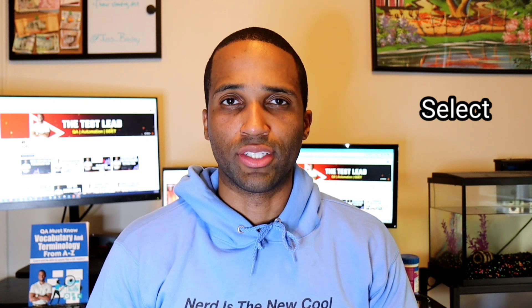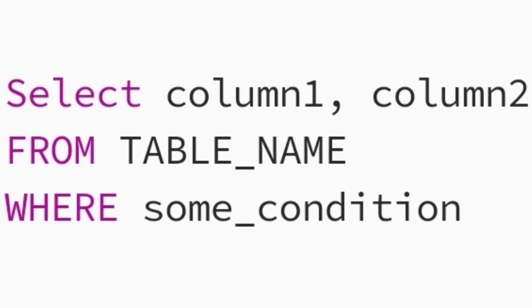But what if you only want certain rows? We need some type of filtering action. That's where the where clause comes in. With the where clause, you can filter out your results to meet a certain criteria. The syntax is: select column one, column two from table name where some condition.